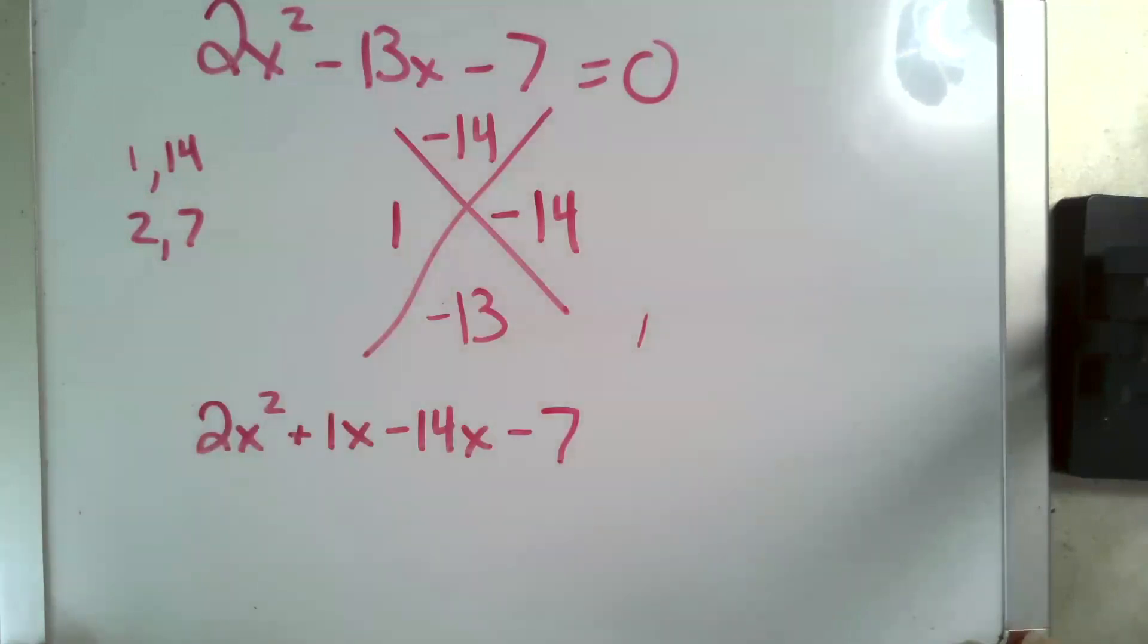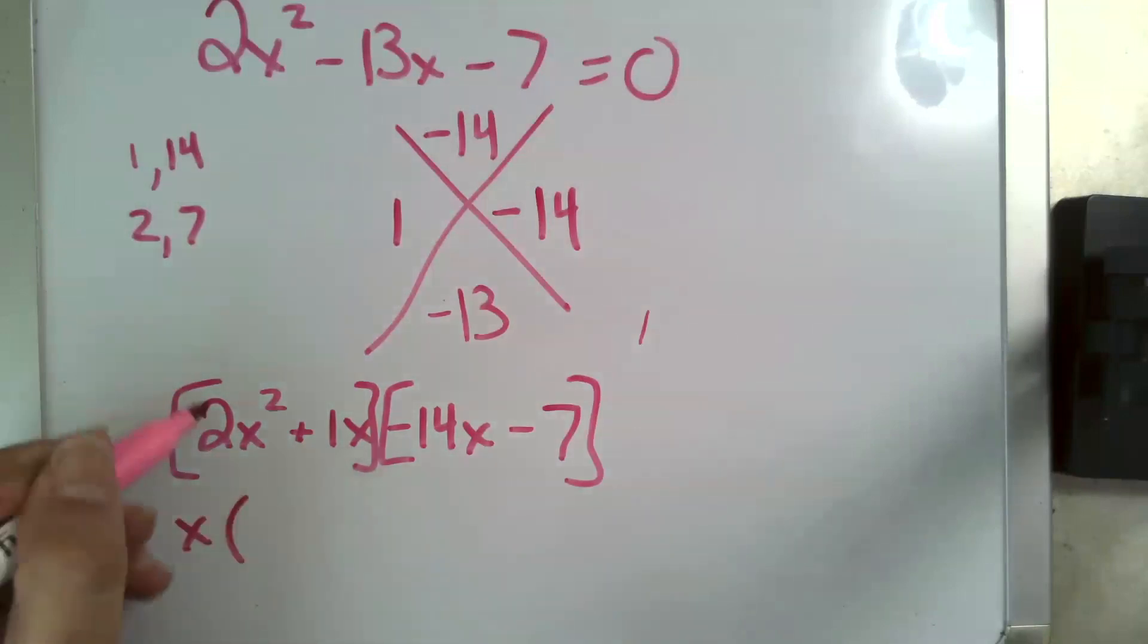Now, I'm doing factoring by grouping. If this is not familiar, click on this link. I'm factoring an x out of these, leaving me with 2x plus 1 there. I want to get rid of this negative. So, whatever I factor out, it's going to be negative, and it's going to be negative 7. And that leaves me with, because remember, when I factor negative 7 out of negative 7, that means division. Negative 7 divided by negative 7 is 1.